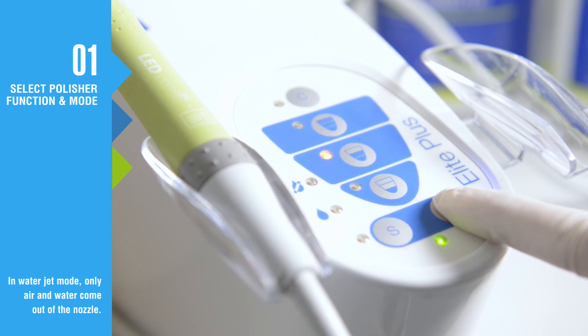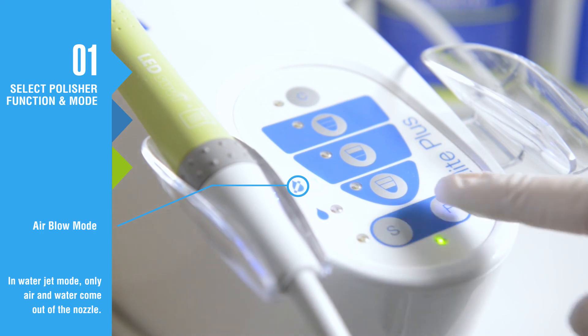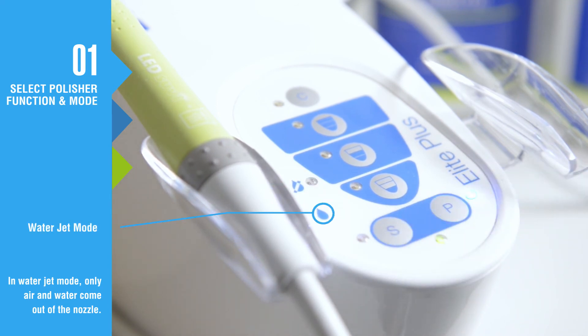Press the P button to activate the polisher mode. A second press of this button activates the air blow mode and a third activates the water jet mode. When using the polisher, only work modes two and three will be activated.